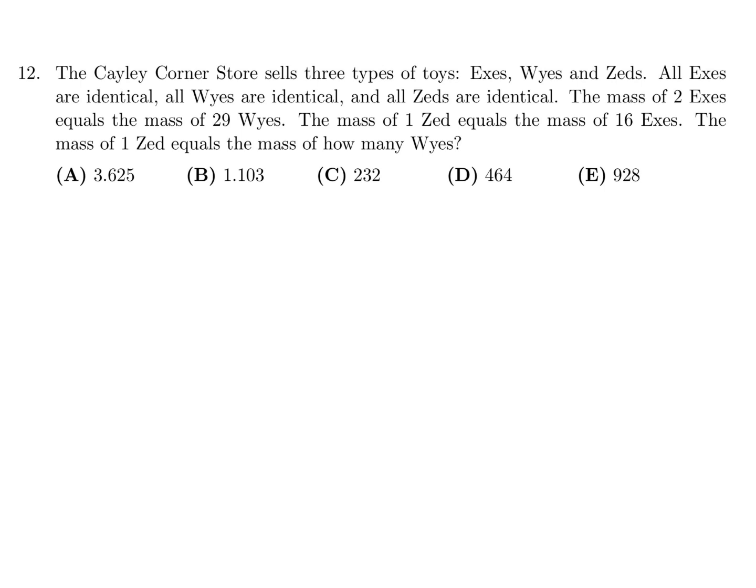The Cayley Corner Store sells three types of toys: X's, Y's, and Z's. All X's are identical, all Y's are identical, and all Z's are identical. The mass of two X's equals the mass of 29 Y's. The mass of one Z equals the mass of 16 X's. The mass of one Z equals the mass of how many Y's?